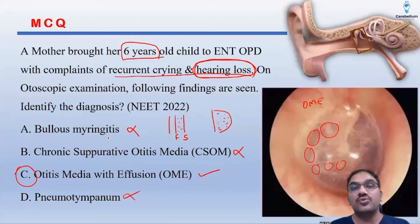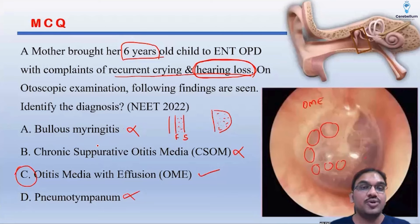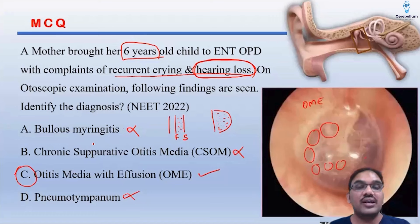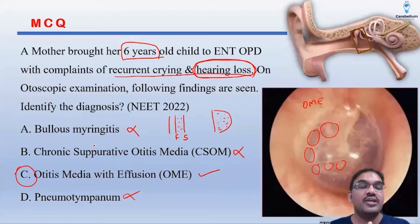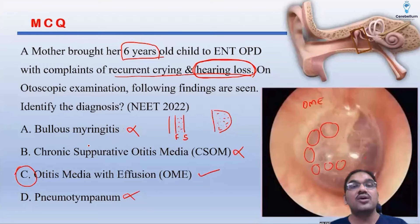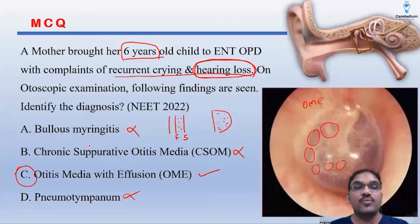Cleft palate can also cause 'blue ear' because the muscles required to open the Eustachian tube cannot function normally due to their abnormal attachments. So the Eustachian tube stays closed, and the patient will repeatedly get episodes of otitis media with effusion, or even ASOM. It can even lead to CSOM depending upon the patient and the surrounding conditions.